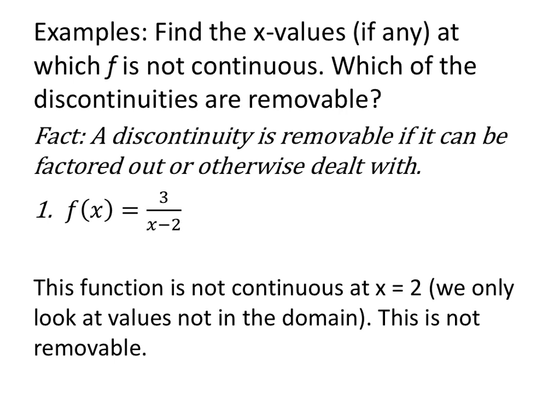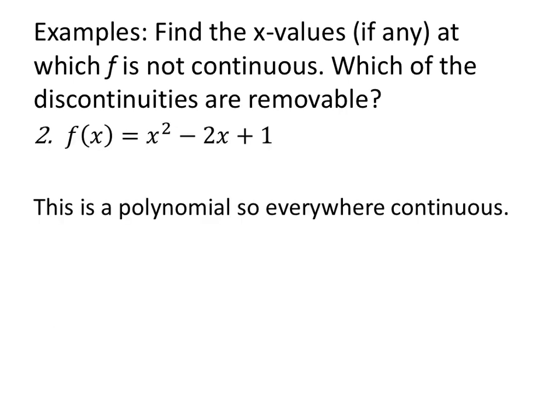Find the x values, if any, at which f is not continuous, and which of the discontinuities are removable. A discontinuity is removable if it can be factored out or otherwise dealt with — so if we get a zero over zero and we can simplify it and find a limit, it can be removable. f of x equals 3 over x minus 2 is not continuous at x equals 2, and this discontinuity is not removable because there's no way we could factor out an x minus 2. f of x equals x squared minus 2x plus 1 is a polynomial, so it is everywhere continuous — there are no discontinuities.